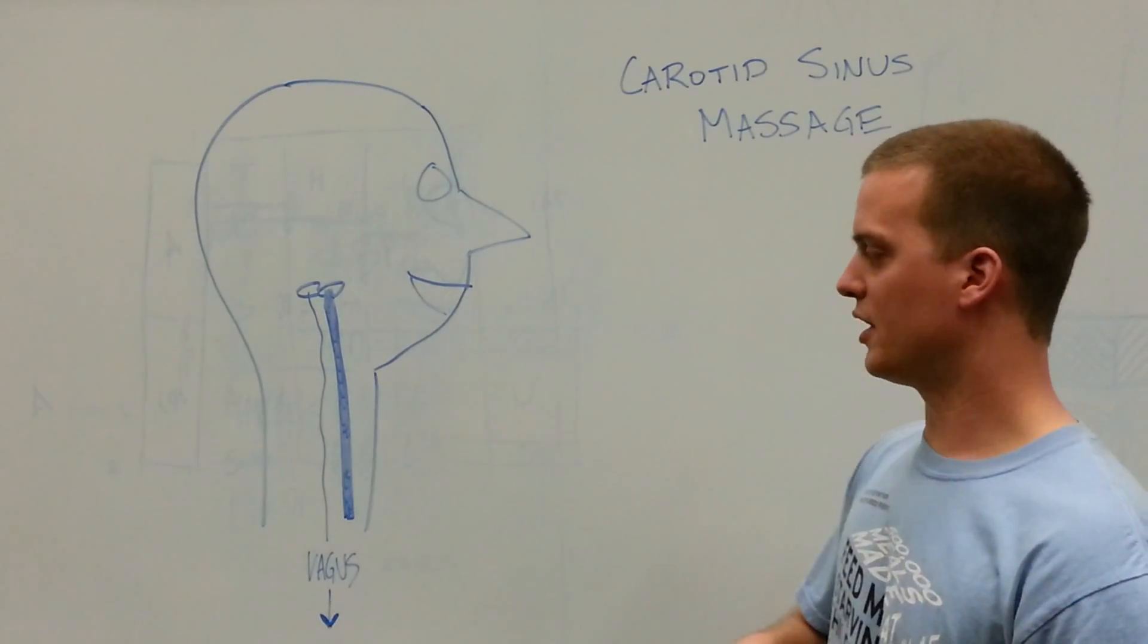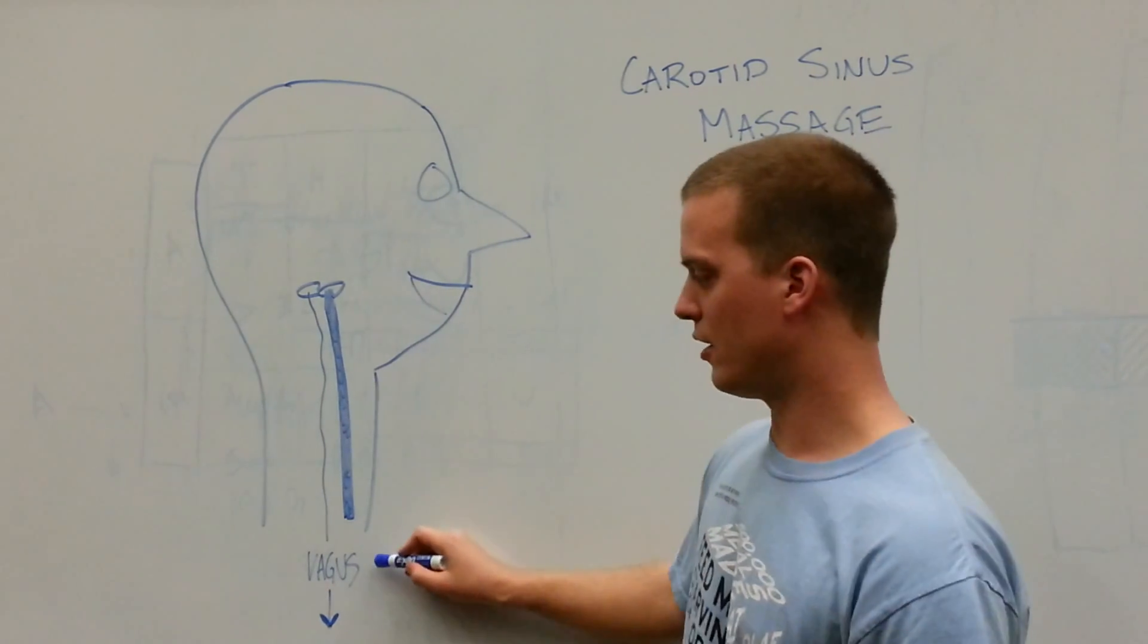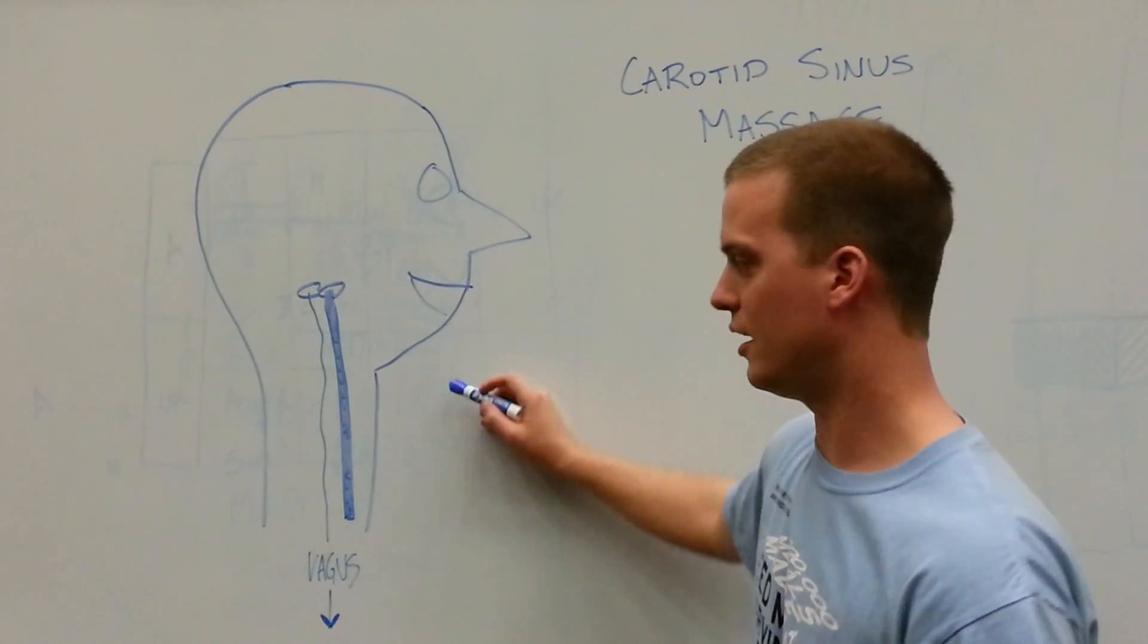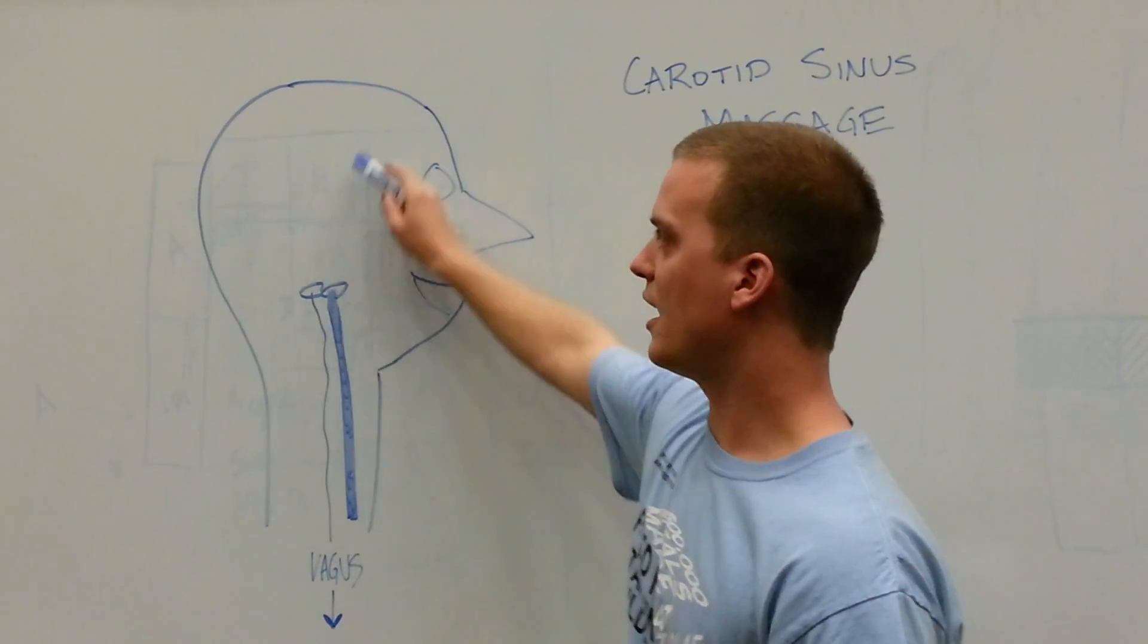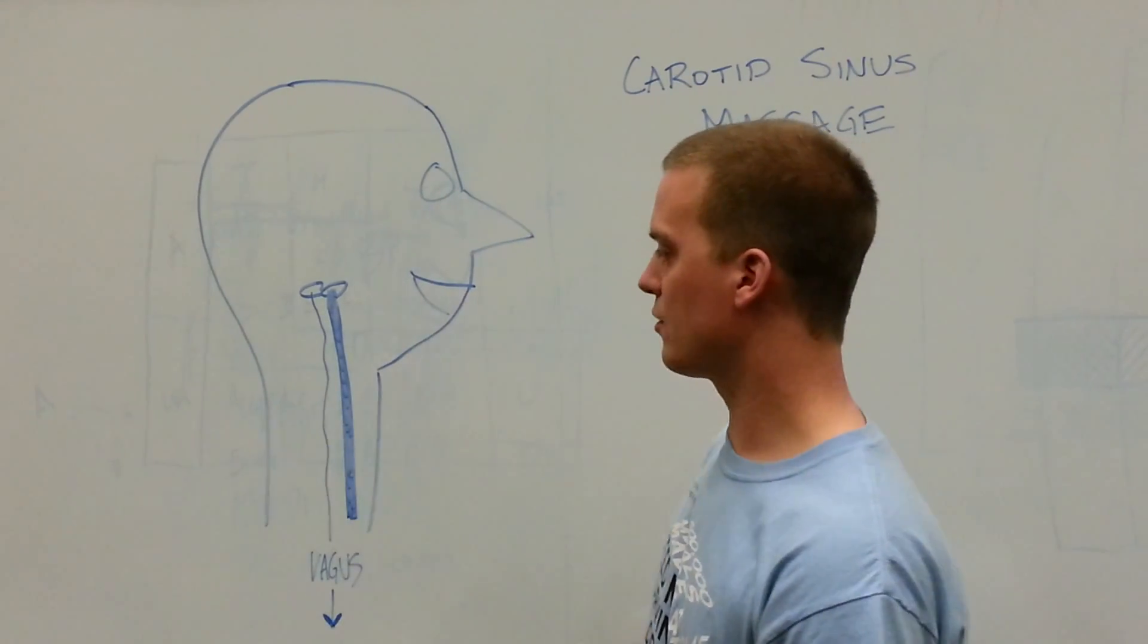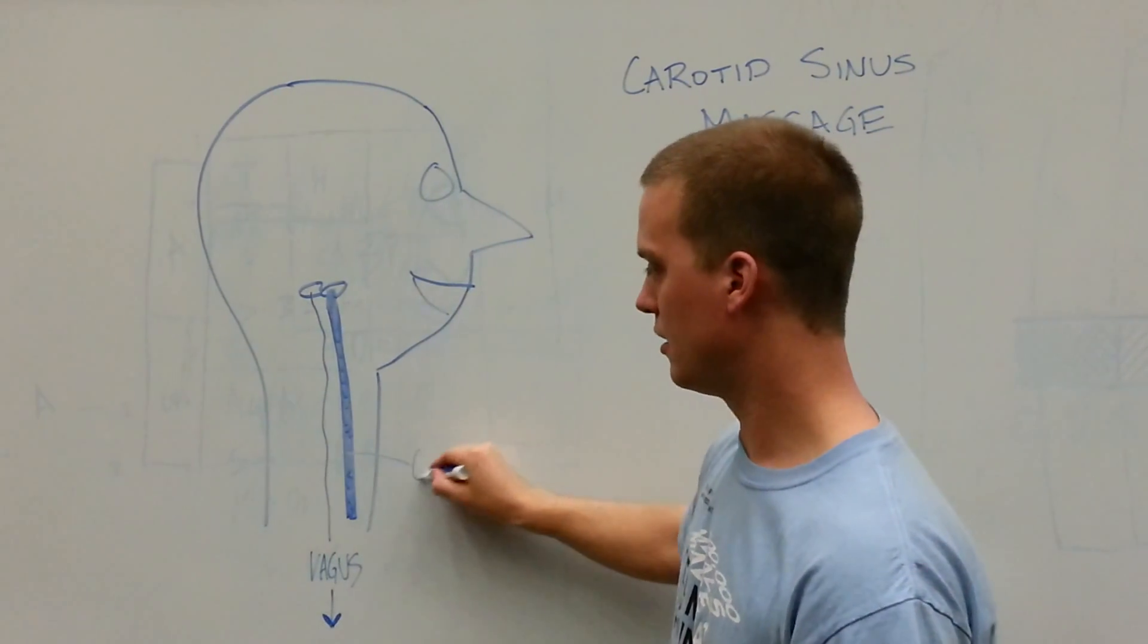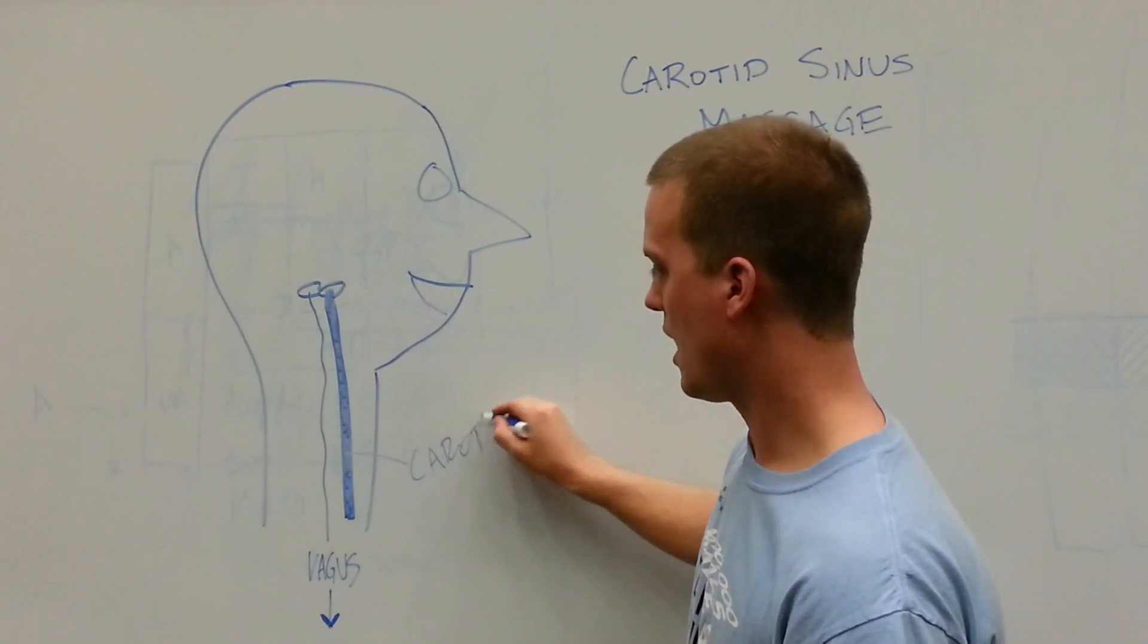So just a little bit of anatomy here before we get started. The vagus nerve, also known as cranial nerve 10, runs up the neck and into the cranium just lateral to our carotid artery, and the carotid artery is the big one.